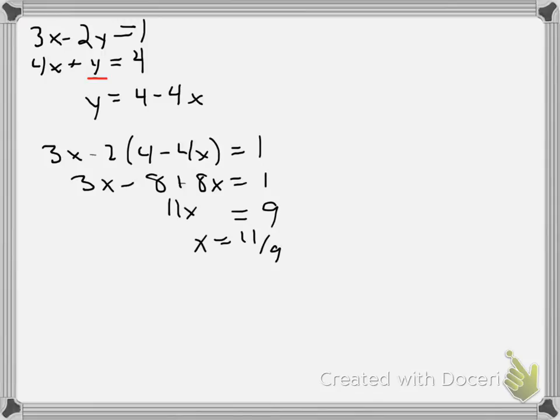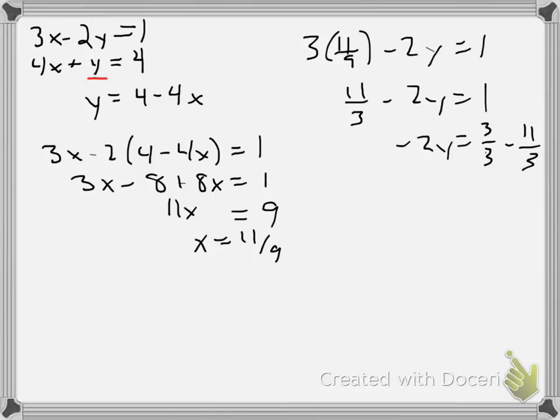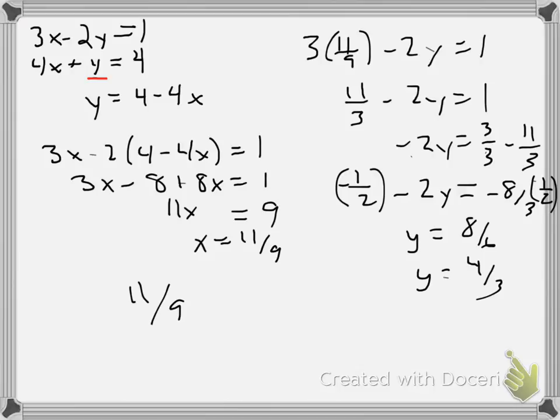So, I get x is 11 ninths. Now, I can substitute x equals 11 ninths into the first equation. 3 times 11/9 minus 2y equals 1. That's 33/9 minus 2y equals 1, which is 11/3 minus 2y equals 1. Subtract 11 thirds to the other side. I'm writing it as 3 over 3. And I get negative 8 over 3 equals negative 2y. Multiply both sides by negative 1 half, and I get that y equals 4 thirds. So, my solution for this using substitution should be x was 11 ninths, y was 4 thirds.